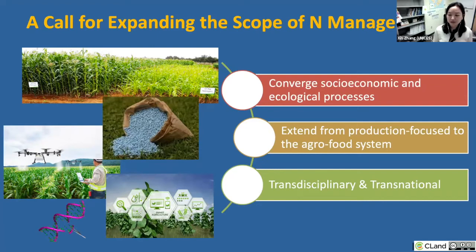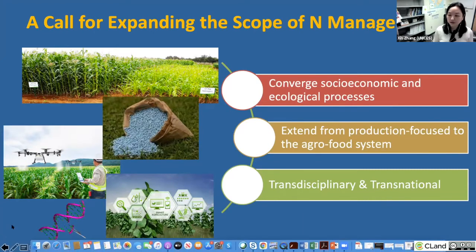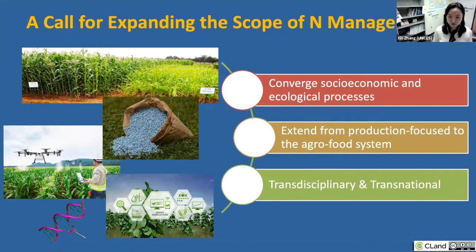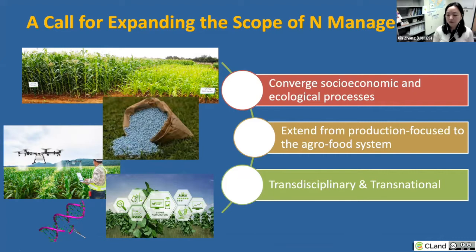We also need to extend from a focus on production on a single plot to the whole or broad agri-food system. The third direction is to engage stakeholders, including farmers but also many other stakeholders involved in the agri-food system and food supply chains, and to consider the interconnections across the boundaries of sectors, countries, and different disciplines.